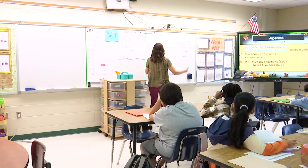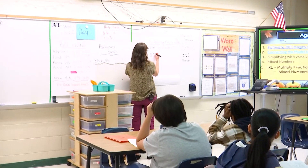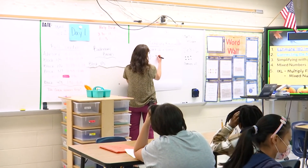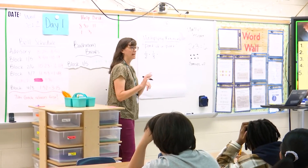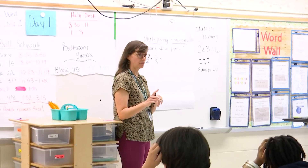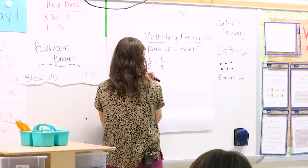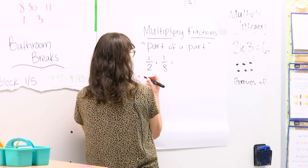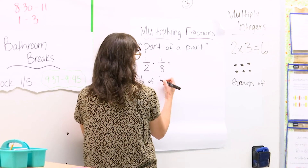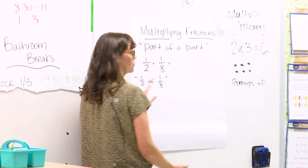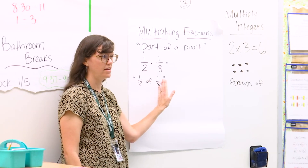So for example, if we had 1/2 times 1/8. Last class we used the area model, right? So this is technically — I'm going to write it down here so we can see — this is half of 1/8. That's really what we're looking for. We're trying to find out what is half of 1/8.